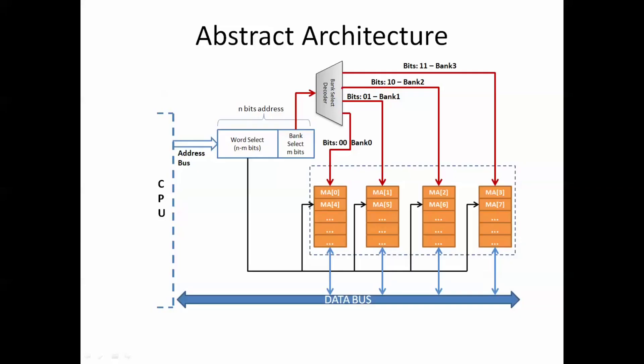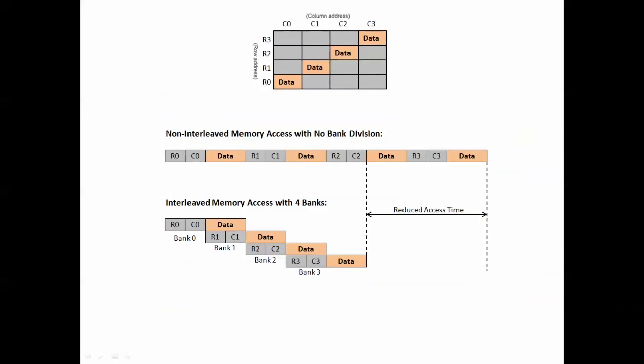So in BANK-based memory interleaving, the main memory is divided into memory banks. An abstract architecture will look like this, wherein the memory addresses are interleaved across these banks. Now let's look at an example to understand the difference between a non-interleaved memory and an interleaved memory access. As you can see, in a non-interleaved memory access, the memory addresses are accessed only when the previous memory access is completed.